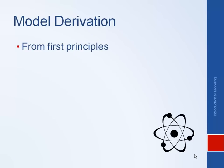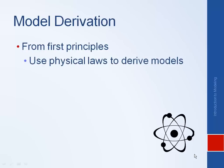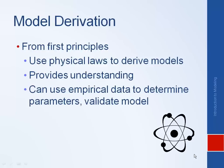So one approach for deriving a model is from first principles. In other words, from physical laws that govern the physical system - Newton's laws, F equals MA, or Kirchhoff's laws, things like that. This type of approach is nice in that it provides a lot of understanding. You understand where all aspects of the model came from. You can then use empirical data to determine specific parameters in your model or to validate the accuracy of your model.